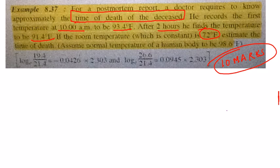There is a deceased person and the temperature of that body is cooling down. They take the first temperature at 10 o'clock and then two hours later they take the second temperature. With these two input values plus the room temperature, we have to find at what time the person died. Whenever there is a change in temperature, you apply Newton's Law of Cooling.